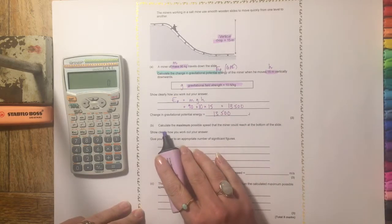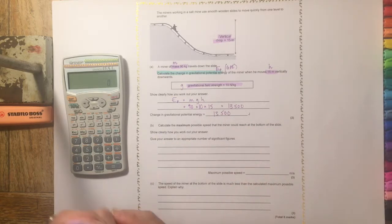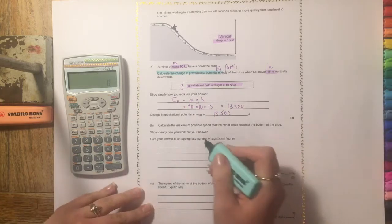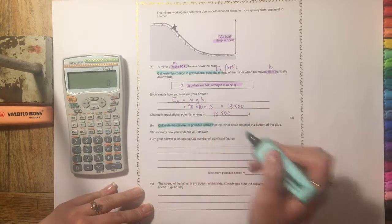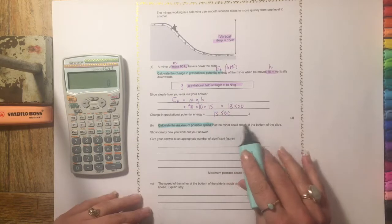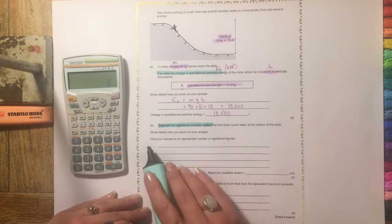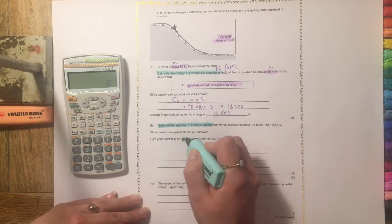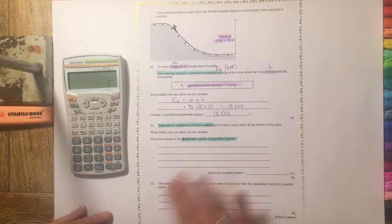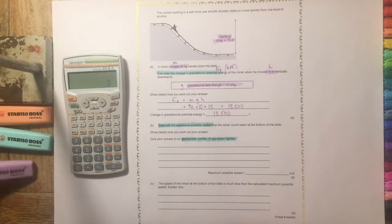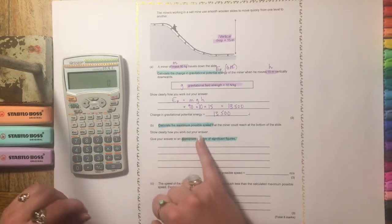So calculate the maximum possible speed that the miner could reach at the bottom of the slide. Show clearly how you work out your answer. Give your answer to an appropriate number of significant figures. So those are the two really important bits of information that we need.